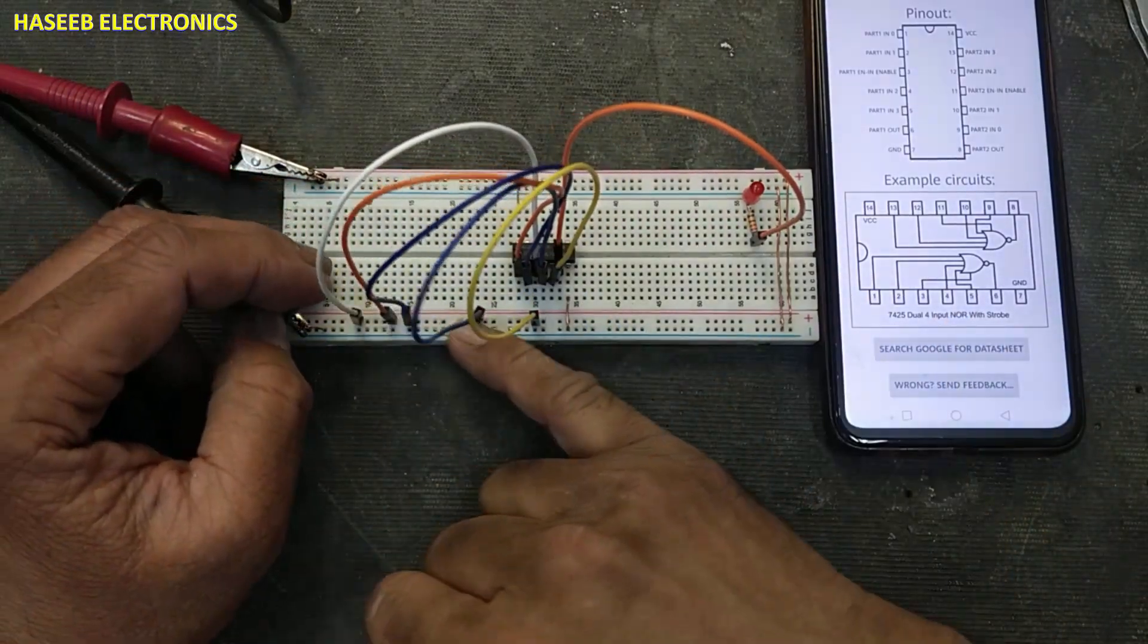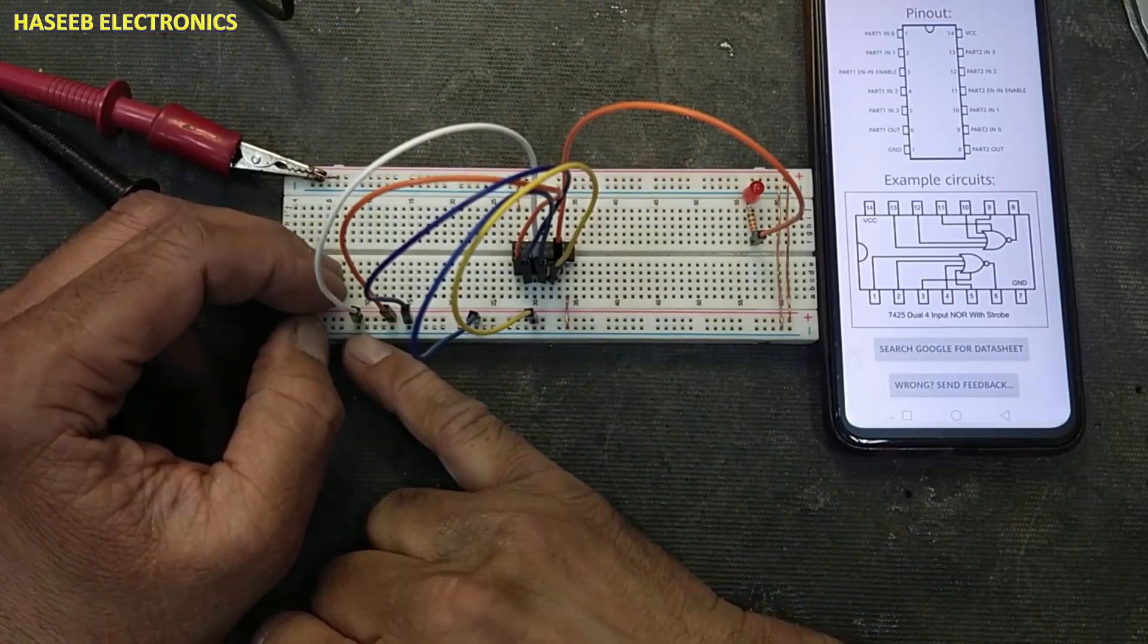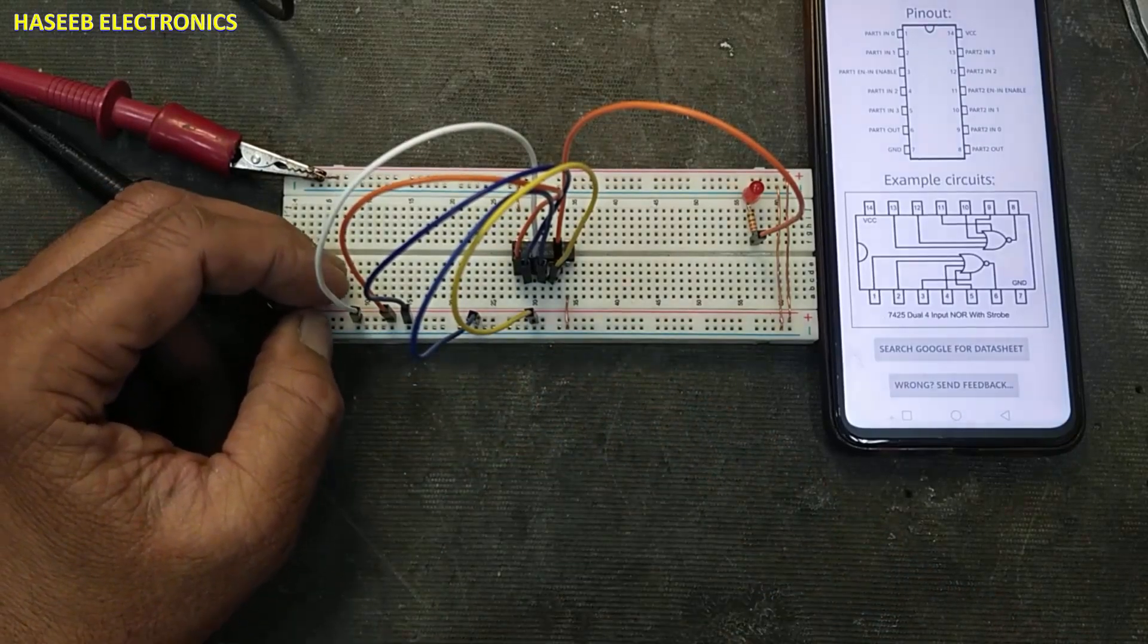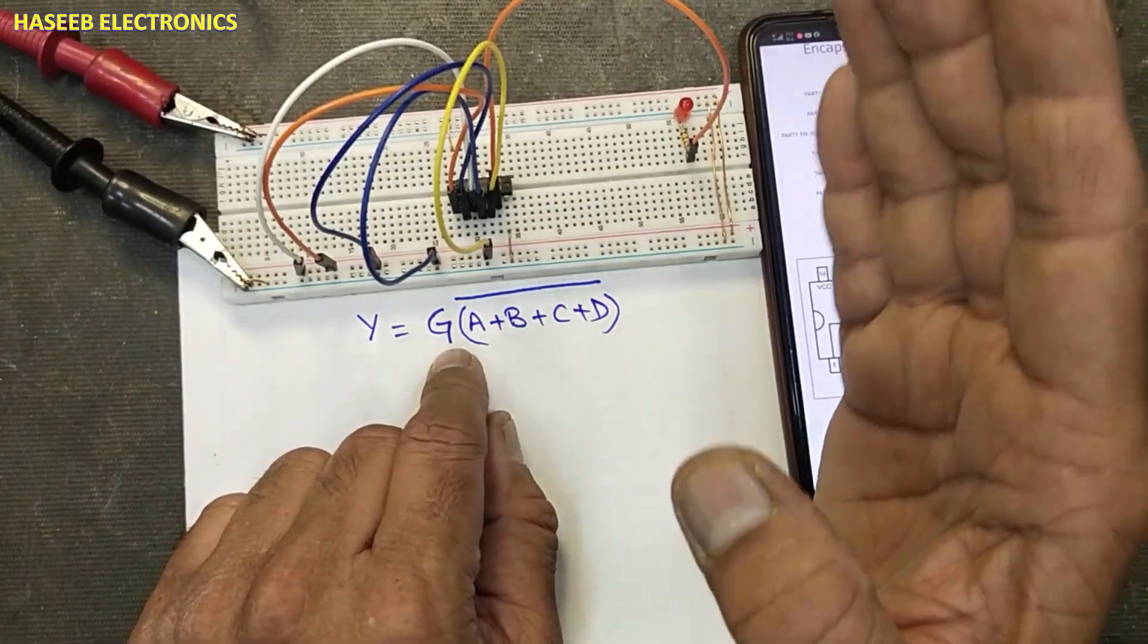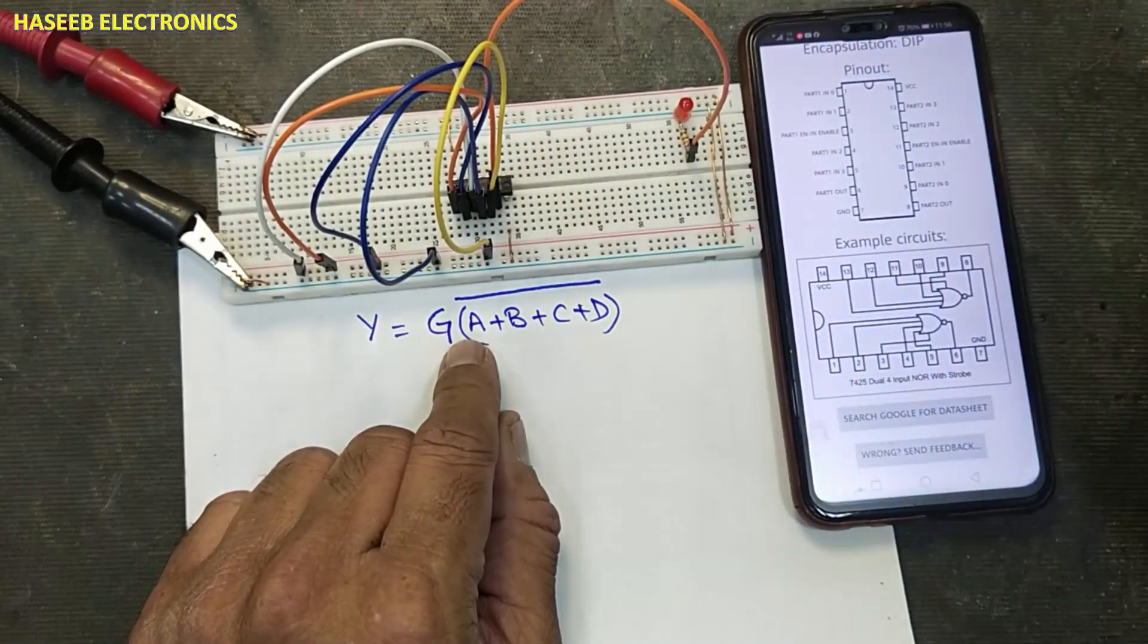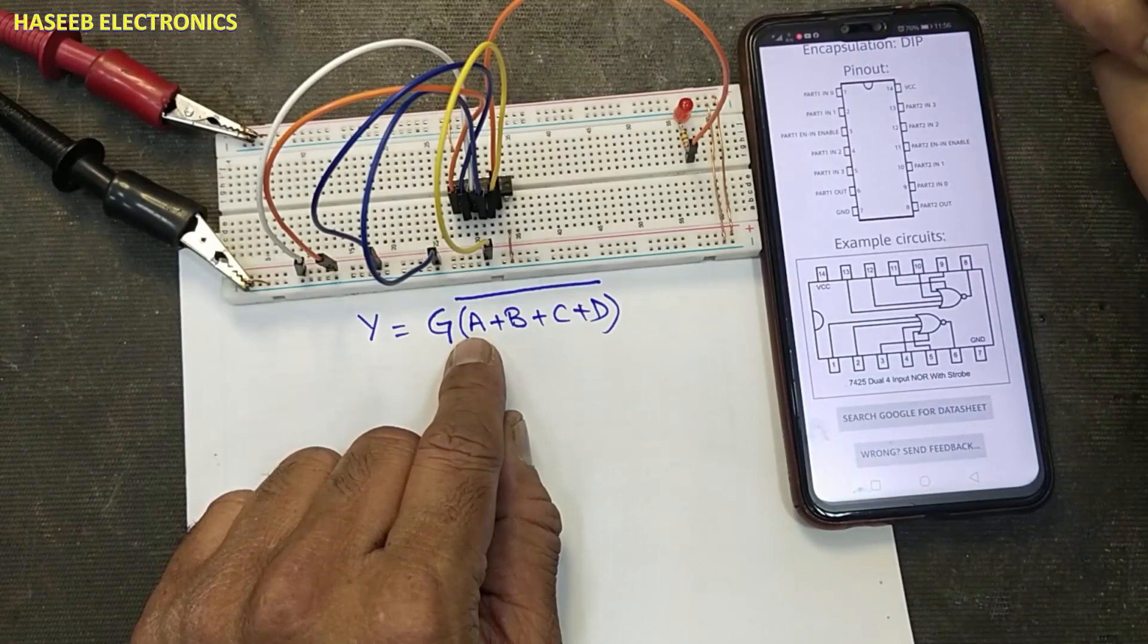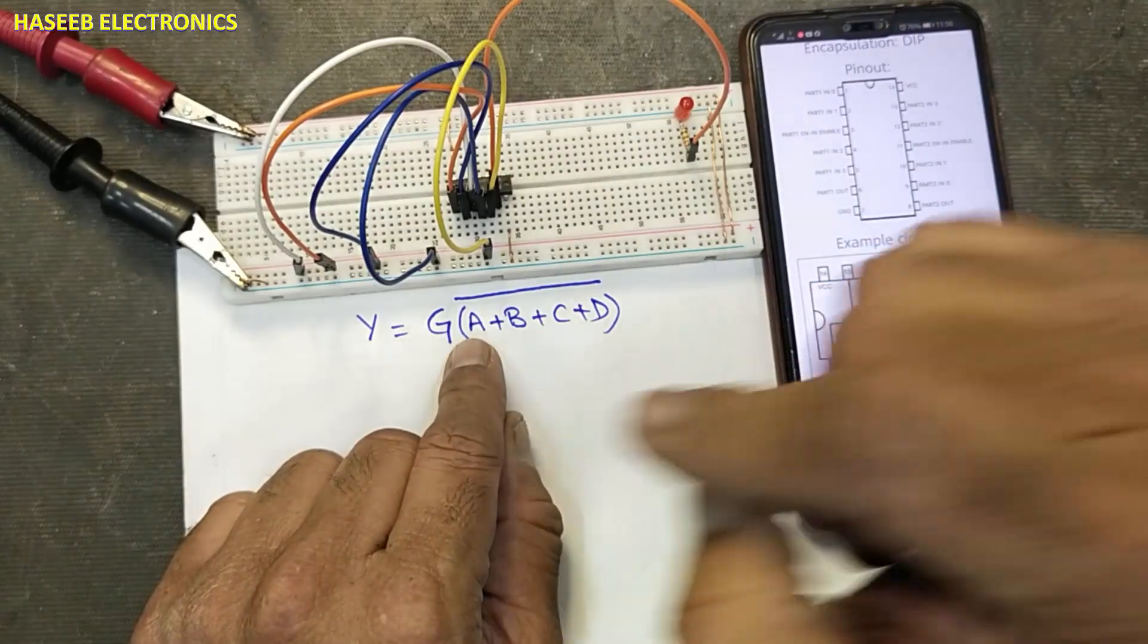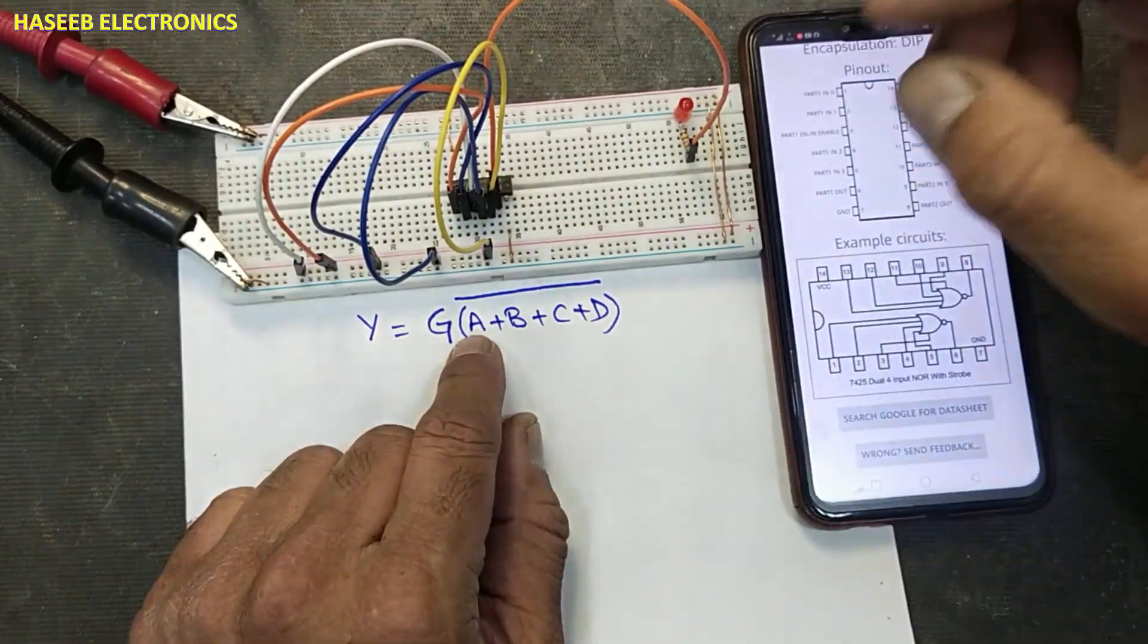Now, all inputs and gate pin, strobe pin is high. In OR gate, any input high or all inputs are high, the output will high. When all inputs will low, output will low.